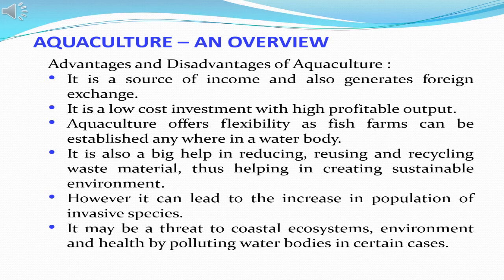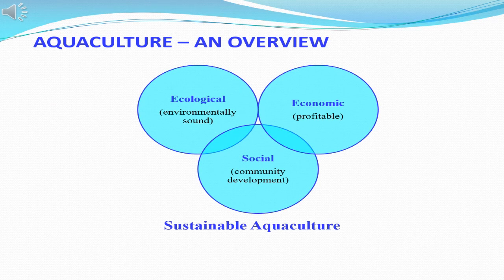We may also remember that aquaculture may pose a threat to the environment if it is not managed in a proper way, especially by polluting water bodies in certain cases and of course by increasing the population of invasive species which are not desirable. Aquaculture has three interwoven aspects which are interdependent: one is ecological — that is, aquaculture should be environmentally sound; second is the economic aspect — it should be profitable; and third is the social aspect — that is, the community should benefit from this type of culture.